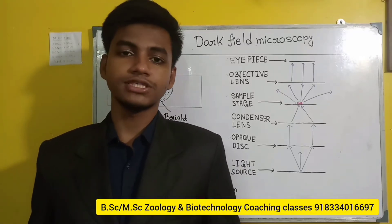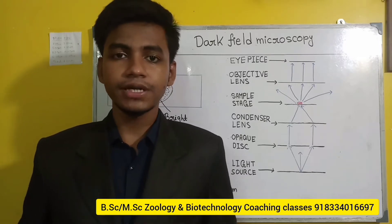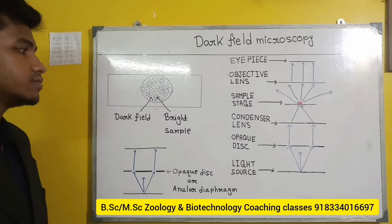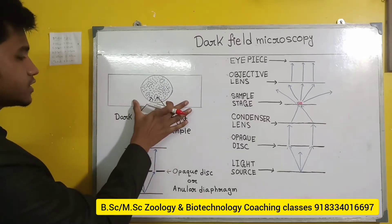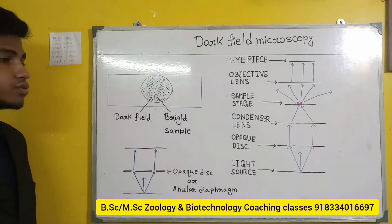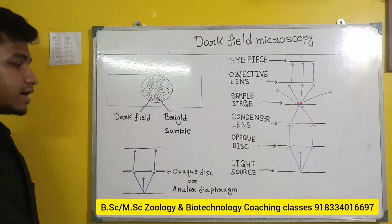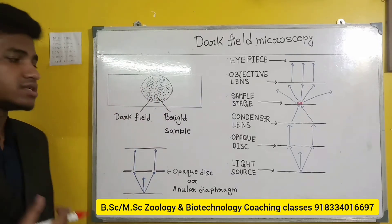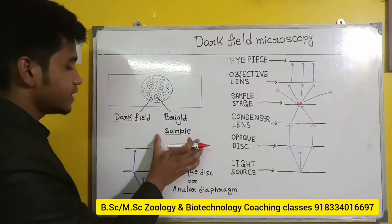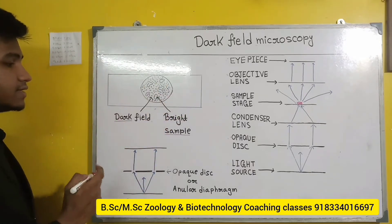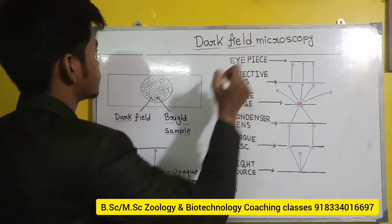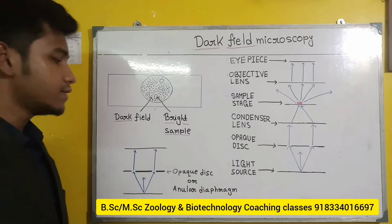Hi friend, I am Rajdi Bacharya, welcome to my channel. Today I am going to teach you the principle of dark field microscope. The first thing we need to know is why it is called a dark field microscope. Suppose this is a glass slide with a sample present. When light passes through this glass slide, the field or background on which the sample is present will appear dark, and the sample will appear in bright color. This is why it is called dark field microscope or dark field microscopy.